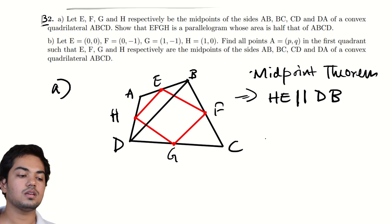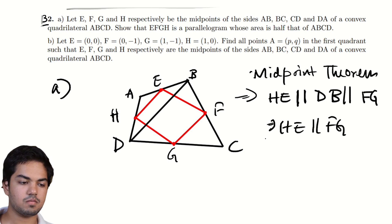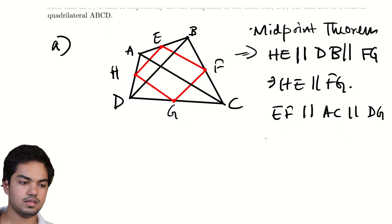Since F is the midpoint of BC, G is the midpoint of DC. So FG must be parallel to DB which is also parallel to HE. Hence HE and FG are parallel. By very similar arguments using this diagonal AC, we can get that EF is parallel to AC is parallel to GH. So hence the opposite pairs of sides in this quadrilateral EFGH are parallel. Hence EFGH is a parallelogram. So very nice.